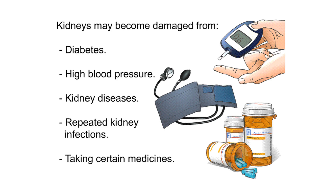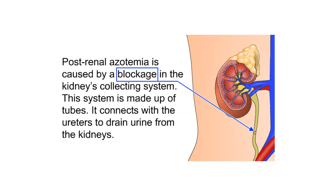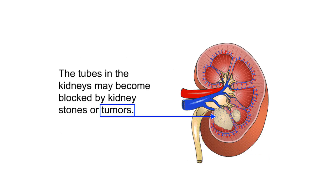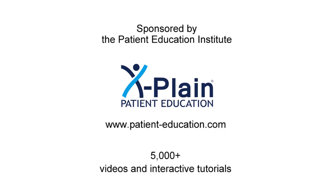Primary renal azotemia may also result from taking certain medicines. Post-renal azotemia is caused by a blockage in the kidney's collecting system — a system of tubes that connects with the ureters to drain urine from the kidneys. The tubes in the kidneys may become blocked by kidney stones or tumors.